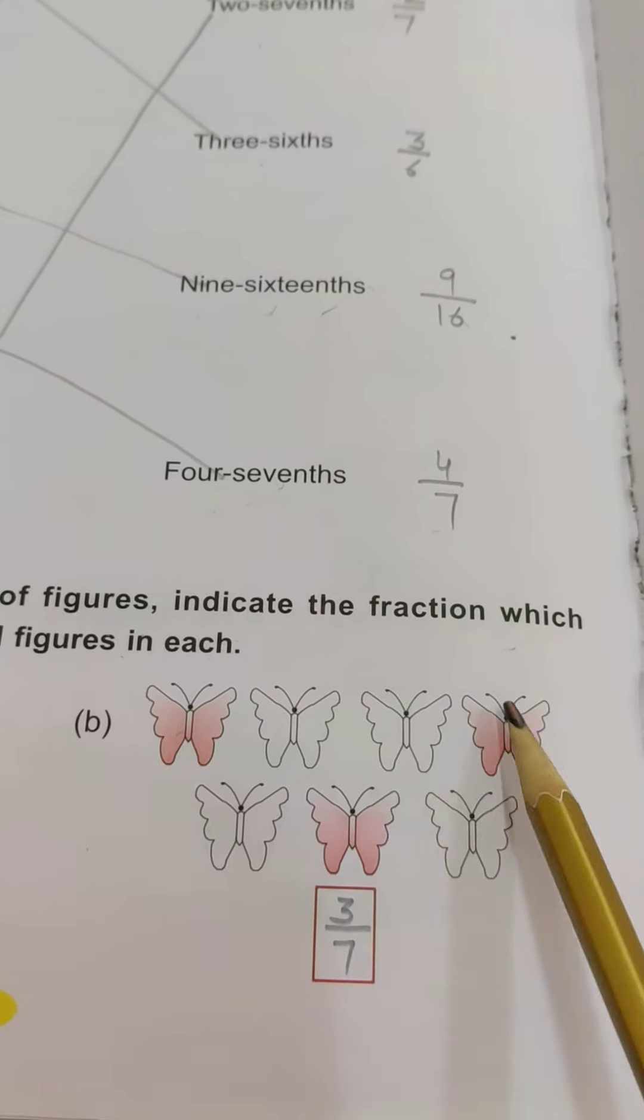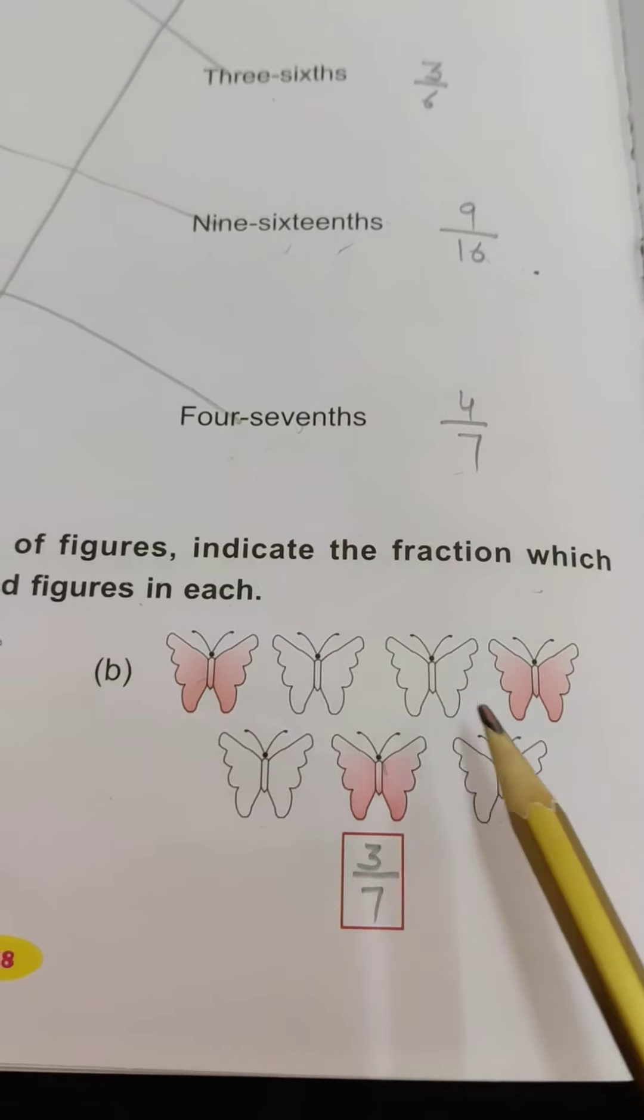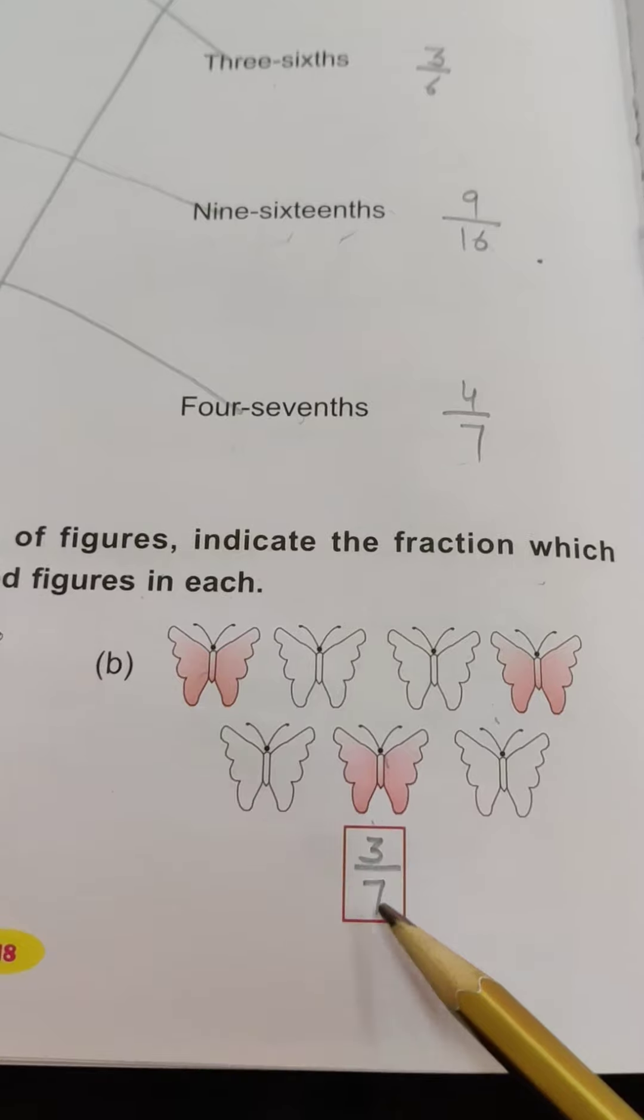Next, see, the same: how many shaded is 3, shaded means 3, and total figures is 7, so it means 3 by 7.